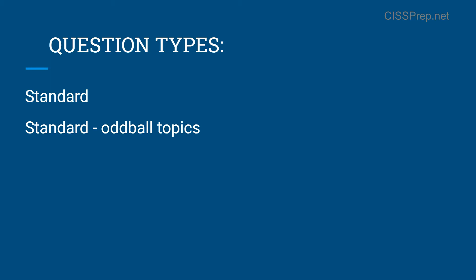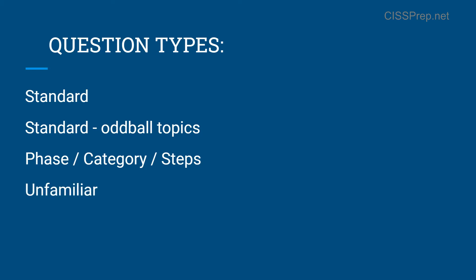The third type would be phase or step-based questions — things that quiz you on phases of the system development lifecycle or the incident response process, for example. The fourth type would be 'unfamiliar,' which just means these are questions that have terms you're not familiar with, stuff that's not even in the common body of knowledge. This can happen with all the questions on the exam, so it's more of a style than a category. The fifth category would be the impossible questions — those that completely stump you, not only because they have terminology you don't understand, but because the question and available responses simply don't make sense. The sixth category would be ethical questions, which test your ability to apply the ISC Squared code of ethics in a real-world scenario.